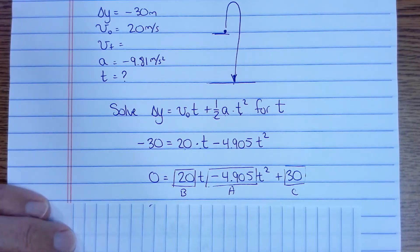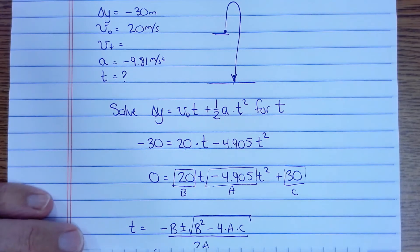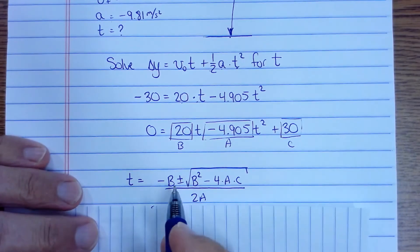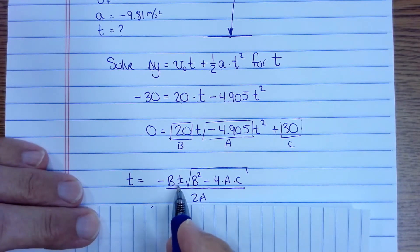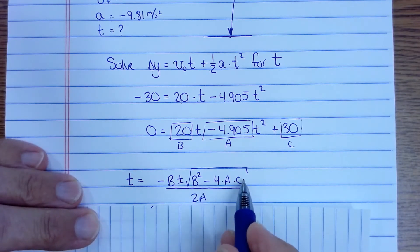So we're going to plug that into the quadratic formula. The quadratic formula says that to find our values of t we take minus b plus or minus, so we can do it twice, once plus, once minus. B squared minus 4ac all over 2a.